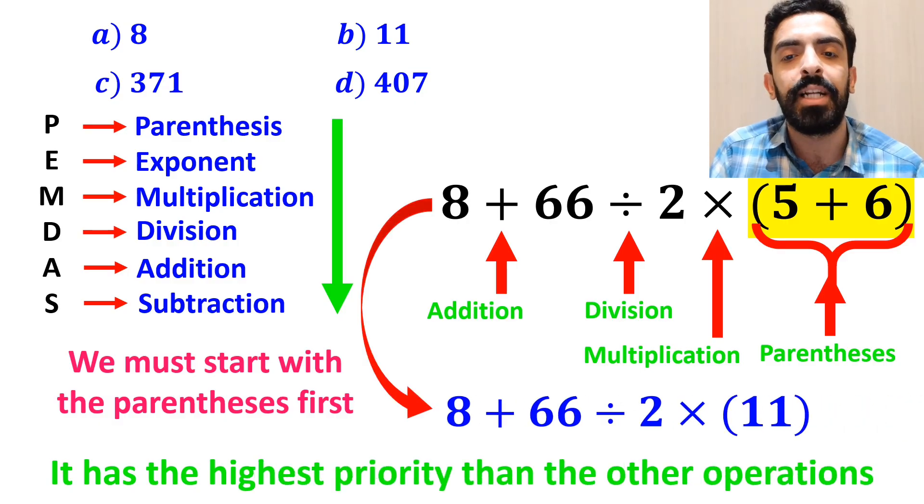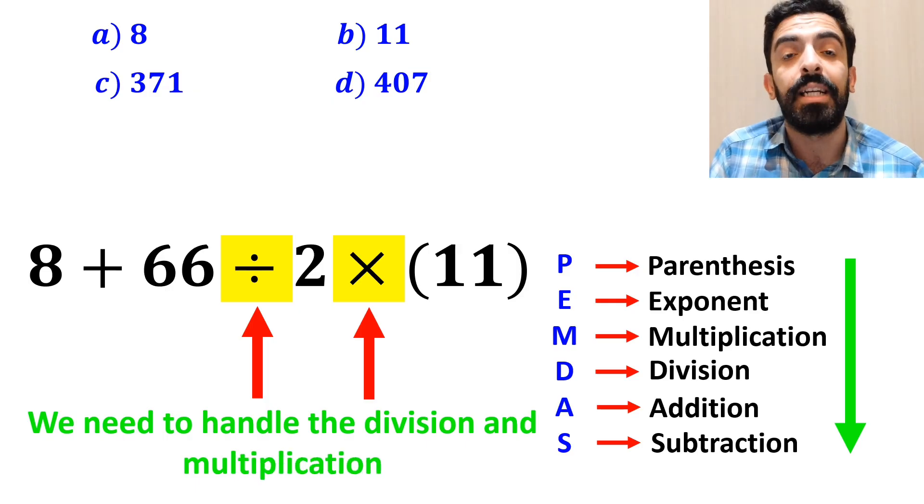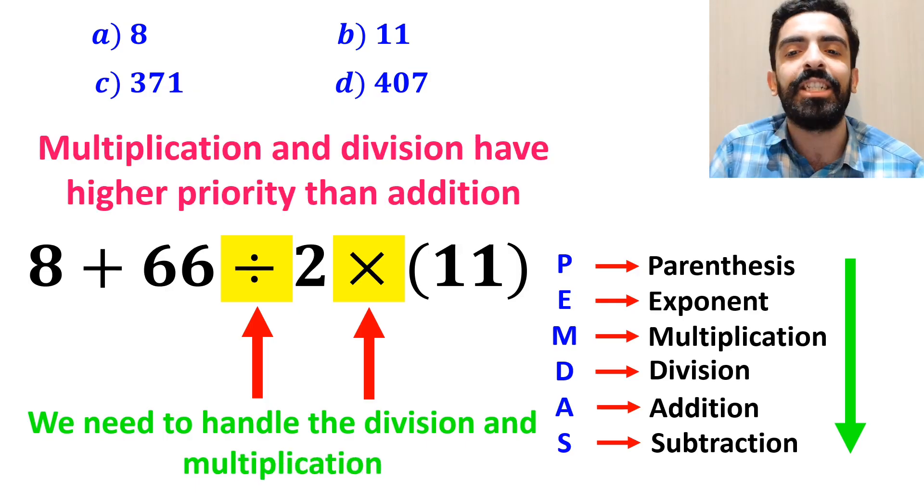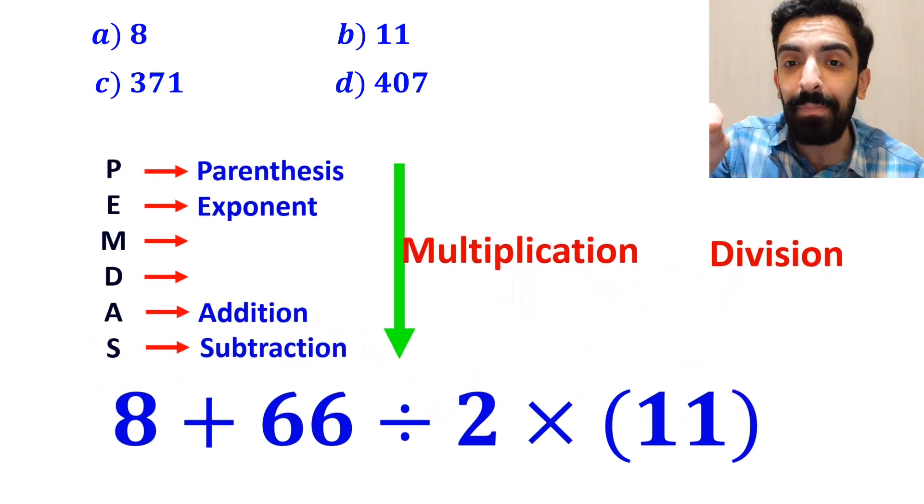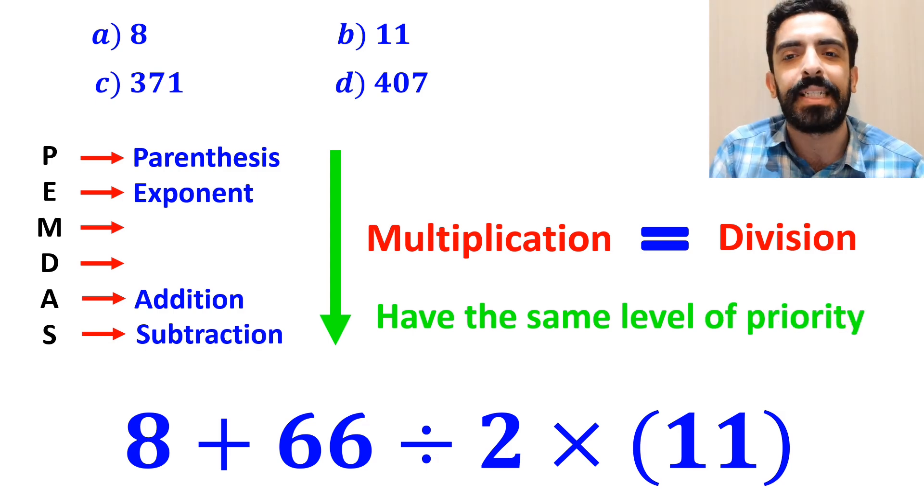So, instead of this expression, we can write 8 plus 66 divided by 2 times 11. And the next step, we need to handle the division and multiplication, because multiplication and division have a higher priority than addition. However, it's very important to note that in the PEMDAS rule, multiplication and division have the same level of priority.